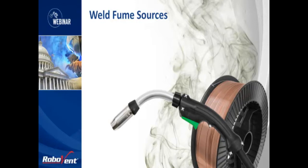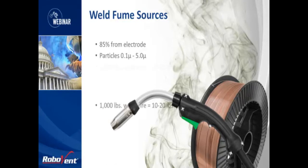We all know that the welding process generates smoke and fume, and the characteristics of the smoke and fume vary in toxicity and the amount of fume generation based upon three variables. Number one, the type of welding process. Number two, the base metal and filler metals used. And thirdly, the composition of the welding rod.